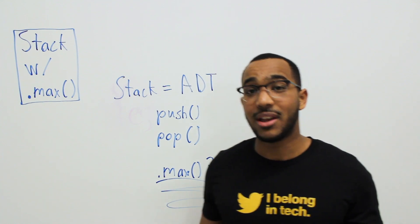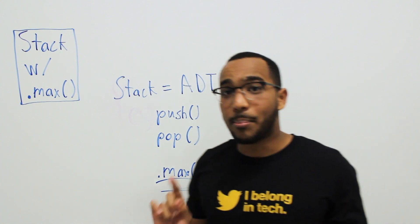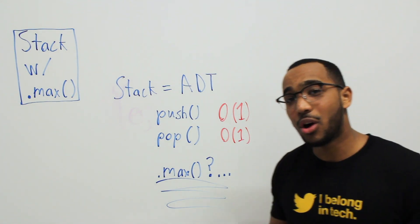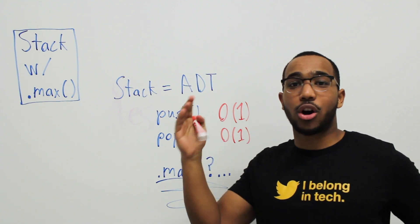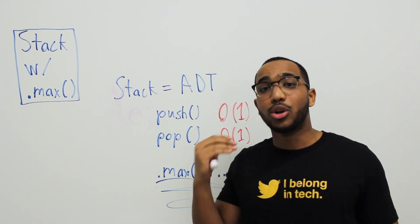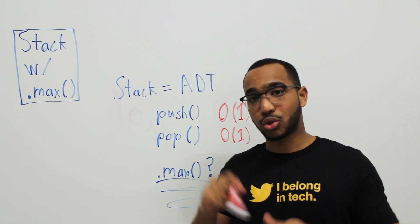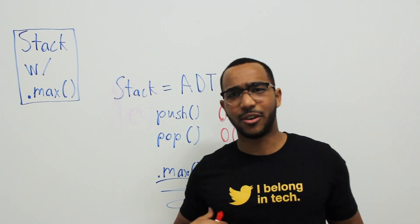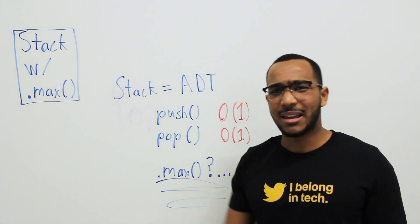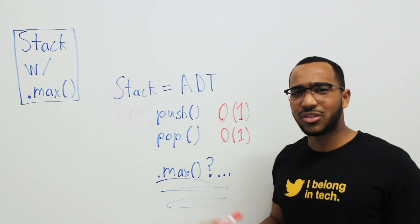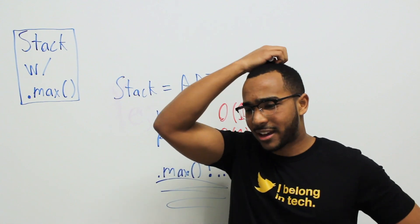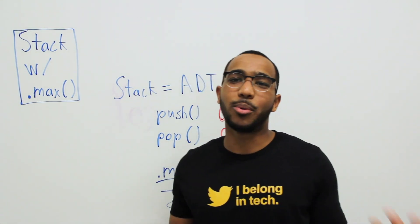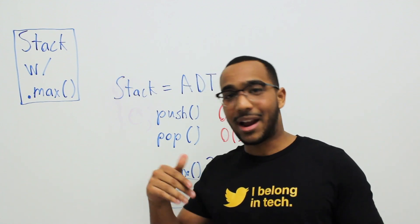A stack is an abstract data type we can implement however we want, but what it needs to support are two principal operations: push and pop. Both operate in constant time — no matter how large the stack gets, the time to push or pop stays constant. A stack is LIFO — last in, first out. But this question asks us to implement a max API, which seems odd, because a stack isn't really made for that.